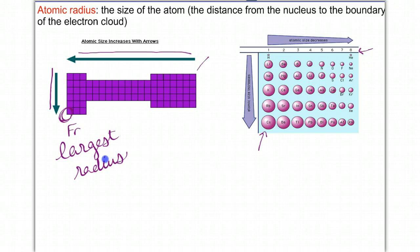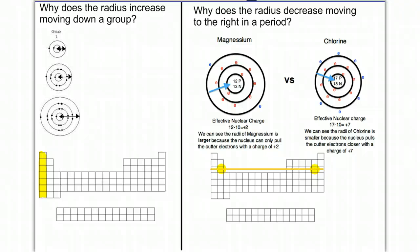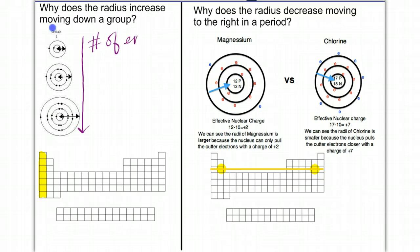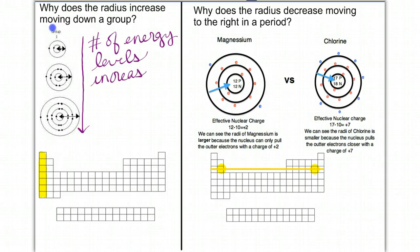Up toward the top right is where the smallest radius is located. Now let's see why. As you move down a group, the number of energy levels increases. Every time you go down to the next row, we add another energy level, which makes the atomic radius larger. So increasing number of energy levels as we move down a group equals a larger atomic radius.